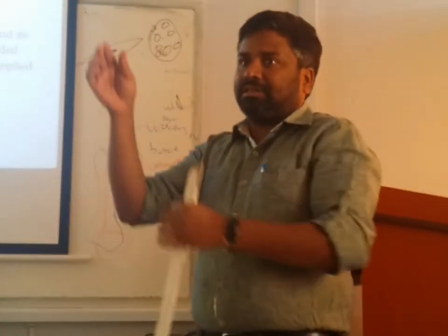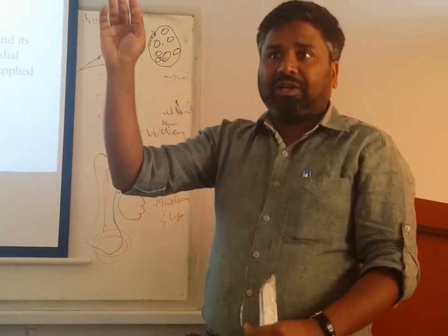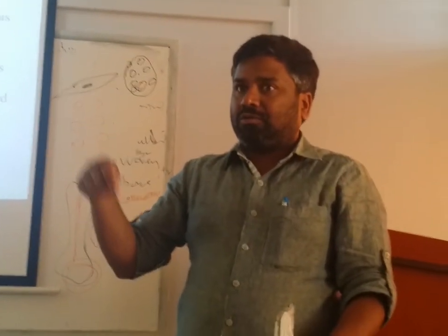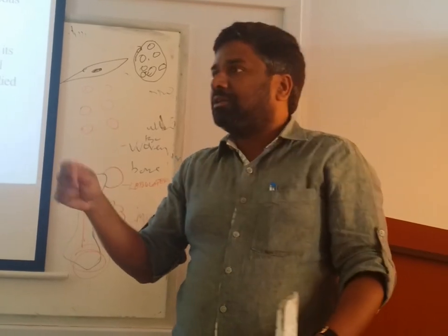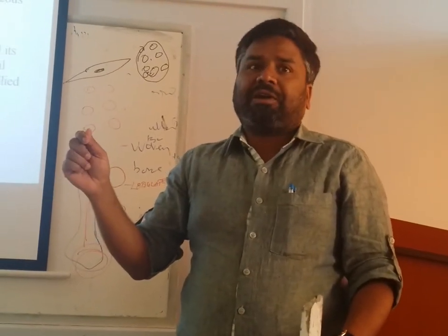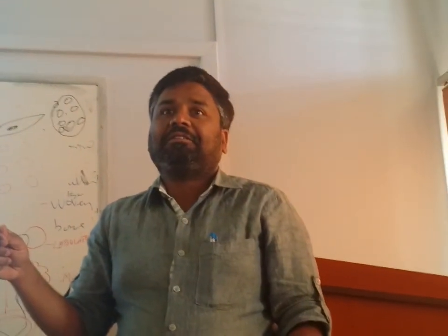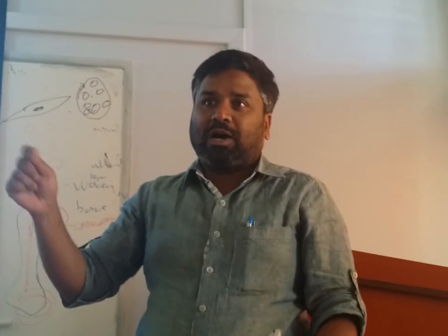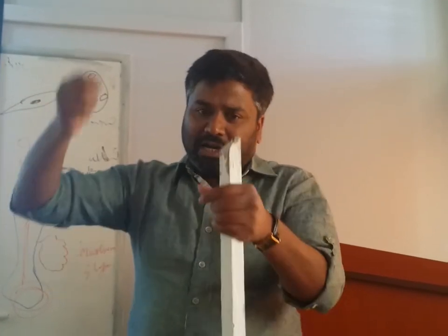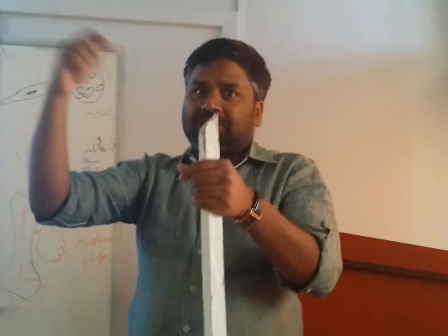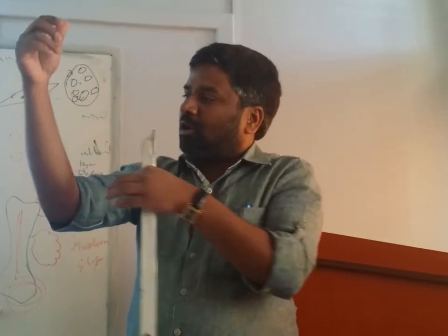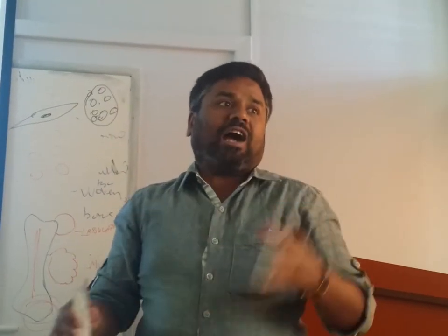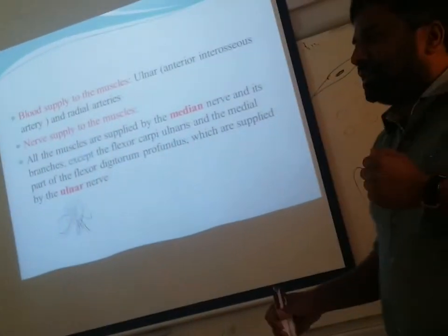All these are called flexors — they do flexion of the wrist. This action is very important for the carpenter, who uses a hammer. Because this flexion action is performed by all these flexors, and these muscles are supplied by the median nerve, the median nerve is called the carpenter's nerve.